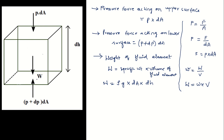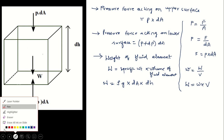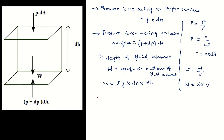Now I will apply the equilibrium concept: summation of all forces equals zero. Forces acting downward (towards gravity) are taken as positive and those acting upward as negative. The pressure force on the upper surface p·dA and weight W act downward, while the pressure force on the lower surface (p + dp)·dA acts upward. So: p·dA + W − (p + dp)·dA = 0.